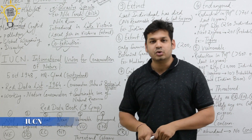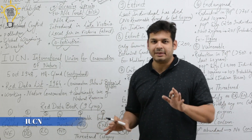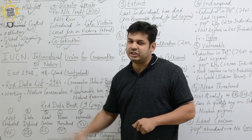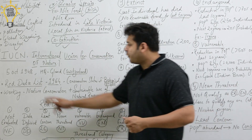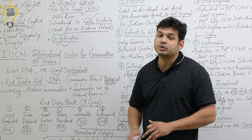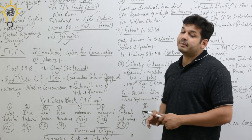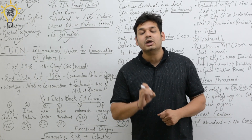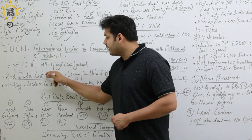Now let's start today's topic: IUCN. It is an international organization. Full form: International Union for Conservation of Nature. It was formed on 5th October 1948, and its headquarters is in Gland, Switzerland. IUCN is famous for publishing and compiling a book known as the Red Data Book.